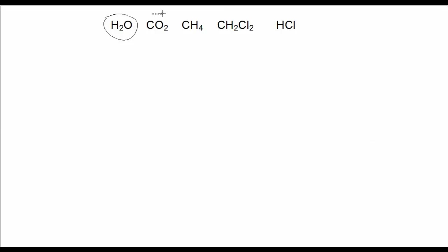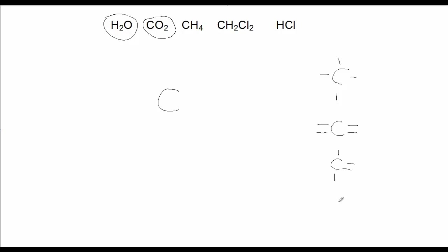Let's work with the next one, CO₂. In this case, there are two oxygens and one carbon, so carbon is going to be the central atom. Common bonding for carbon, as we saw before: carbon with four single bonds, carbon with two double bonds, carbon with a double bond and two single bonds, and finally carbon with a triple bond and a single bond.